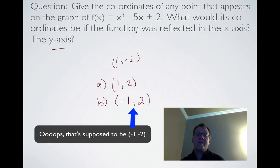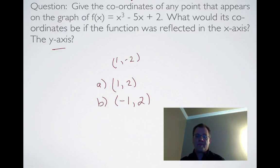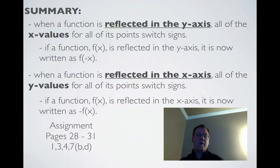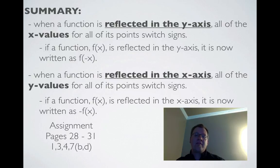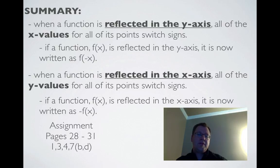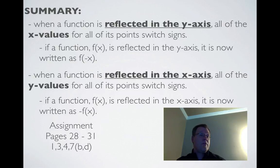In summary: a function reflected in the y-axis has all its x-values switch signs, written as f(-x). A function reflected in the x-axis has all its y-values switch signs, written as -f(x). That's reflections of functions. The assignment is on pages 28 to 31 — you can do questions 1, 3, 4, and parts 7B and 7D. See you tomorrow.